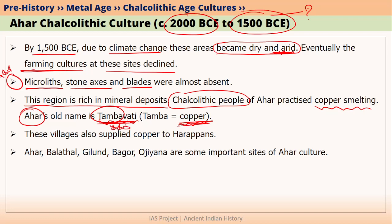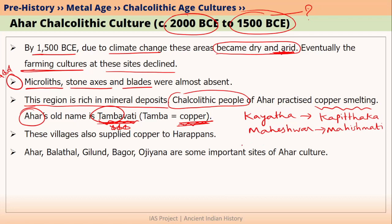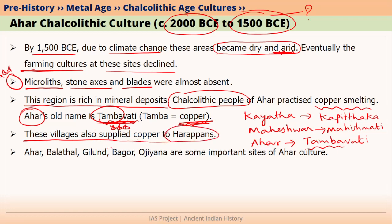These types of questions are generally asked in UPSC prelims. So far in our Chalcolithic cultures, we have learnt that the old name of Kayatha was Kapittakha, the old name of today's Maheshwar was Mahishmati, and the old name of Ahar was Tambavati. Since these people had abundant copper deposits nearby, the villages in Ahar Chalcolithic culture were supplying copper to Harappans, as Ahar is located close to Gujarat, where we have Harappan cities like Lothal, Dholavira, and Surkotada.